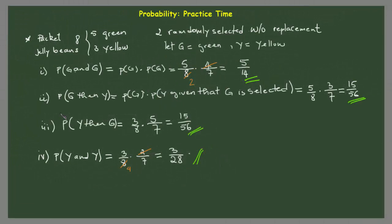As you can see in this exercise, we had two independent events — the first and the fourth — because the probabilities are found separately from each other. The two in the middle, G then Y and Y then G, are dependent: the first condition must be fulfilled before we can continue to the second. If we don't find G first, there is no possibility to continue finding Y. That's why those two are considered dependent events. Thanks for watching, and see you in the next video!